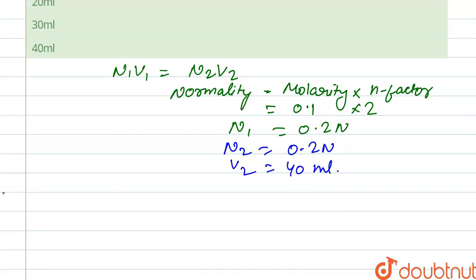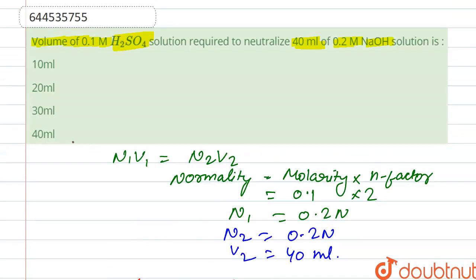So we substitute all the values in this equation. N₁ is 0.2 into V₁ we have to find out, and N₂ that is 0.2 and V₂ is 40 ml. So it is cancelled out and from here V₁ becomes 40 ml. This is the volume of H₂SO₄ required, so our correct option is option 4.